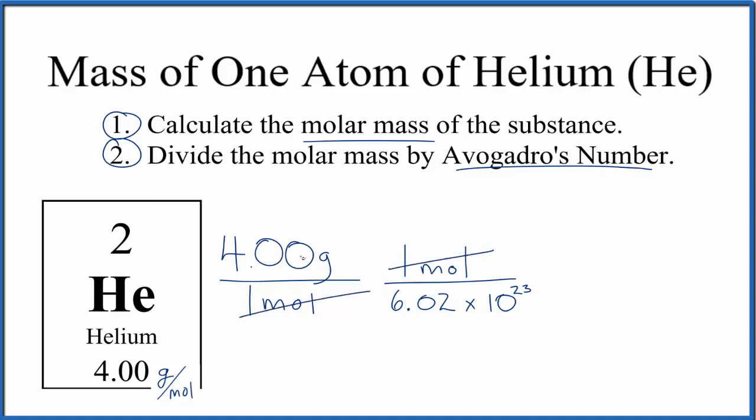So again, we're just dividing 4.00 by Avogadro's number. When we do that, we get 0.66 times 10 to the minus 23rd grams.